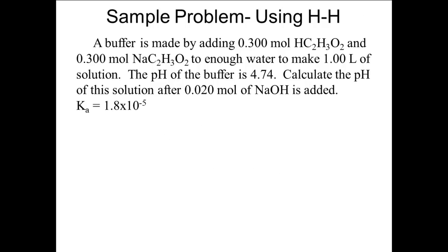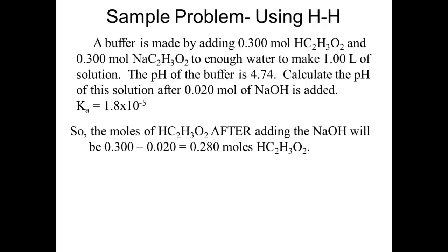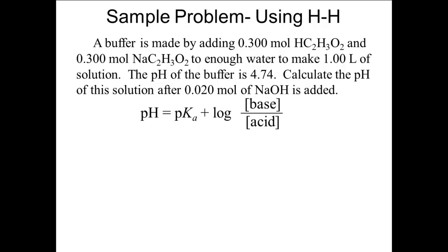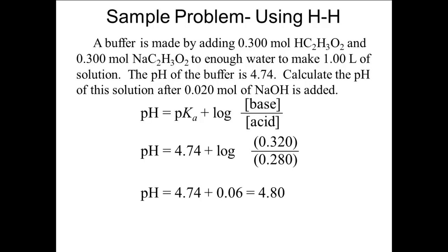Let's do the same problem as before, but this time use the Henderson-Hasselbalch equation. The addition of 0.020 moles of base decreases the moles of acetic acid to 0.280 moles, and increases the moles of the conjugate base to 0.320 moles. Plugging into the Henderson-Hasselbalch equation, pH equals pKa (4.74) plus log of 0.320 over 0.280. So the pH equals 4.74 plus 0.06, or 4.80 — the same value as before.